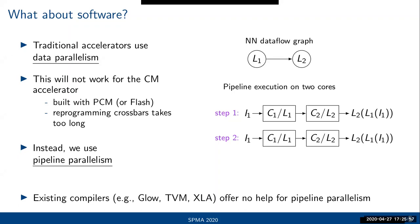The problem is that existing compilers — such as Glow, TVM, or even XLA — do not offer help for dealing with this pipeline parallelism. So we need to rethink the software stack if we want to drive this type of accelerator.